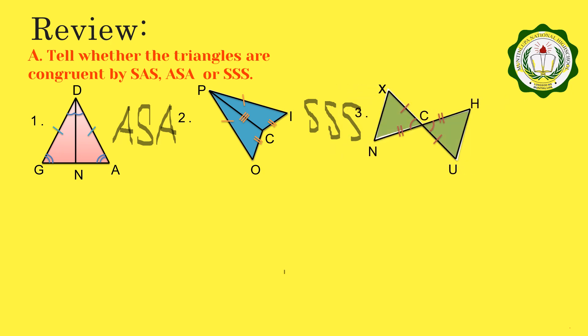For number 3 figure, the congruent parts are: segment XC congruent to segment UC, segment HC congruent to segment NC, and angle XCN congruent to angle UCH. We have a side, an included angle, and a side. So we can say that these two triangles are congruent by SAS congruence postulate.